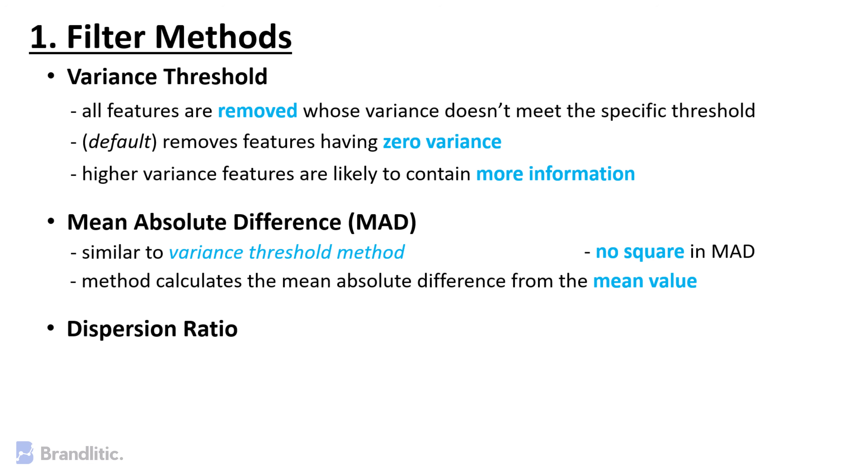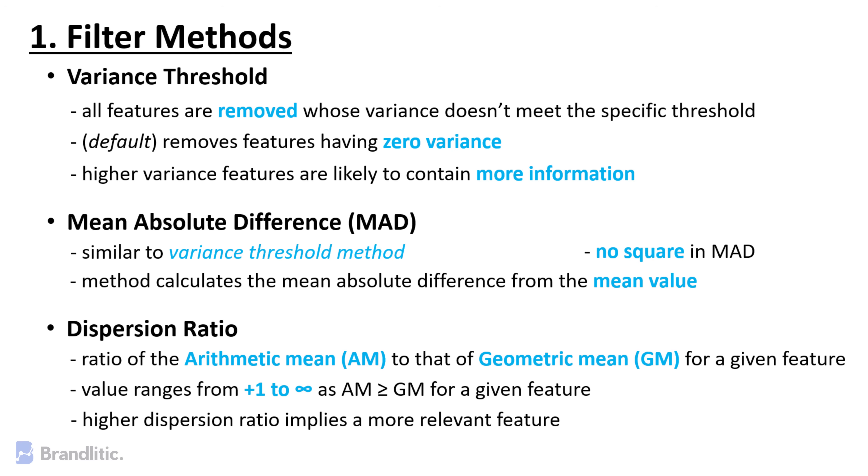Dispersion Ratio. Dispersion ratio is defined as the ratio of arithmetic mean to the geometric mean. Its value ranges from plus one to infinity as arithmetic mean can be greater than or equal to the geometric mean for a given feature. Higher dispersion ratio implies a more relevant feature.